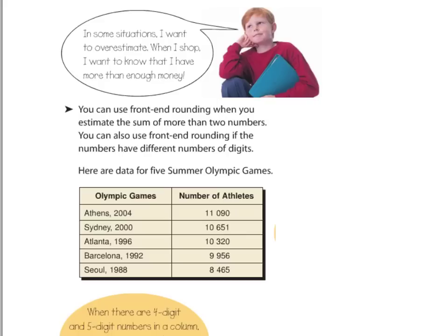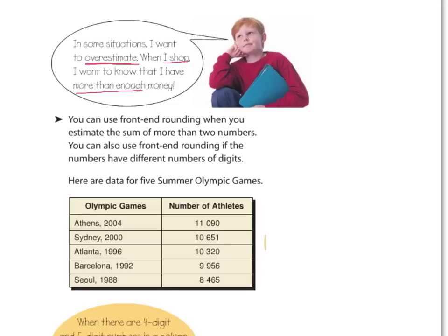In some situations, you really do want an overestimate. For example, when you go shopping, you always want to have an overestimate so you know you have more than enough money. You don't want to underestimate and get to the cash register and realize you don't have enough money. So whenever we want an overestimate, front-end rounding is not a good choice because you are automatically underestimating. In those situations, use compensation as your best bet, and make sure your number is always larger than the actual number.